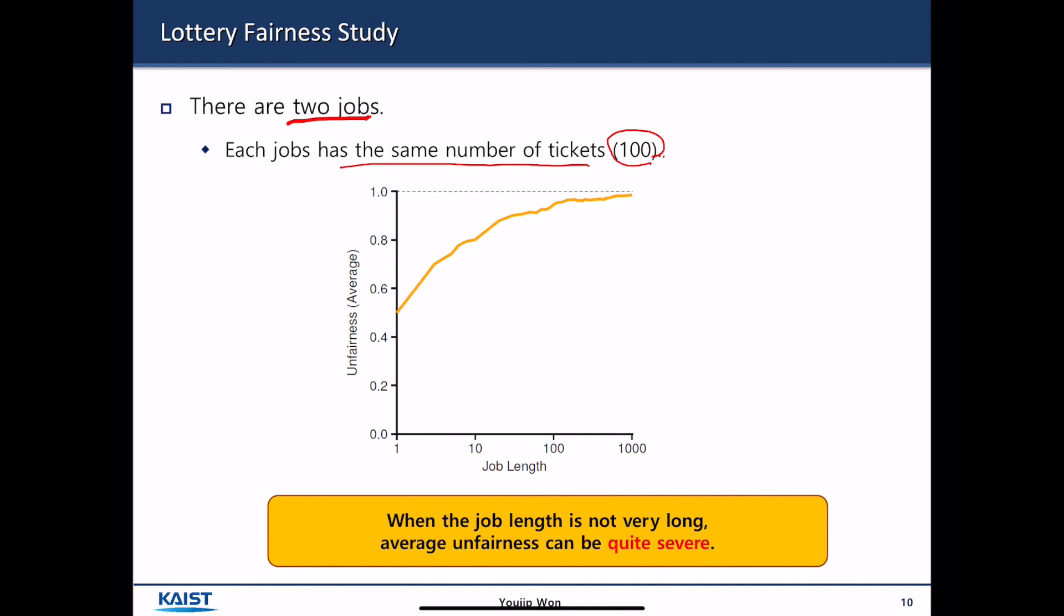And then, when the job length is short, the x-axis here represents the length of the job. Maybe one millisecond or 10 seconds or even two hours. When the length of the job is short, it is very difficult to guarantee some sort of fairness between the two because there are not many chances for the CPU scheduler to flip the coin. But if the process executes longer and longer amount of time, then it is more likely that two processes acquire a fair share of the CPU cycles. So, when the job length is not very long, the average unfairness can be quite severe. So, this is the downside of the lottery scheduling.